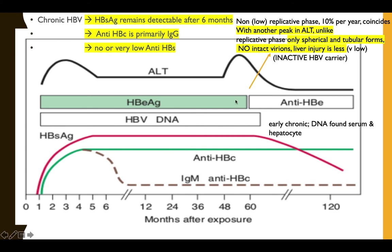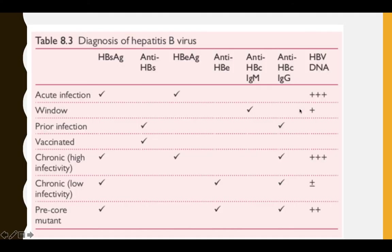To enter the inactive carrier state, you may have another exacerbation with high ALT. Once replication stops — meaning you develop anti-HBe — in the inactive carrier state you detect surface antigen, anti-core, and anti-HBe. The lower chronic state shows anti-HBe positive and possibly surface antigen depending on when you detect it.